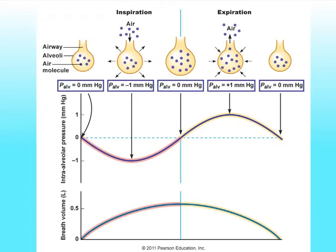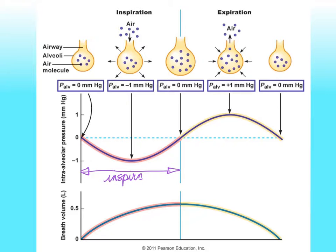Now here we finally get to the graph. Near the top we have our alveoli, which change size — they increase, then decrease, and keep repeating that pattern. This all has to do with whether we are inspiring or expiring. The graph is divided into a portion representing inspiration and the other half representing expiration, and then we would start all over again with inspiration. The graph would continue repeating because breathing — inhalation and exhalation — is a very rhythmic pattern.